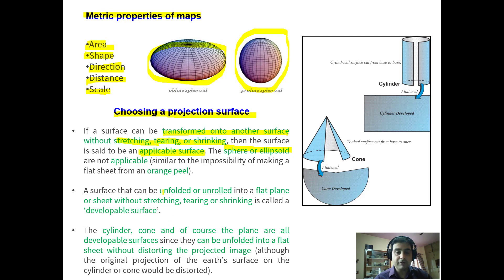Then a surface that can be unfolded or unrolled into a flat plane or sheet without stretching, tearing or shrinking is called a developable surface. Like in case of cylinder, if you give a vertical cut to cylinder, it will turn into a 2D surface. Also it applies to the cone. If we give a vertical cut to the cone, it can be developed into a 2D surface. So cylinder and cone are developable surfaces. The cylinder, cone and the plane are all developable surfaces and can be unfolded into a flat sheet without distorting the projected image.